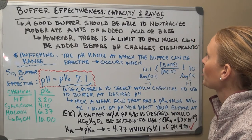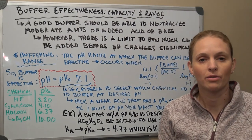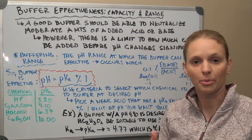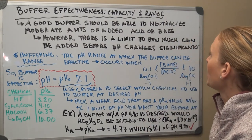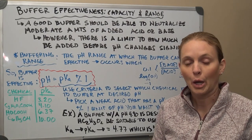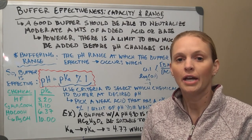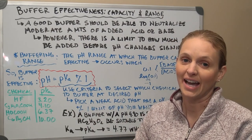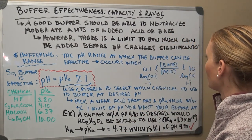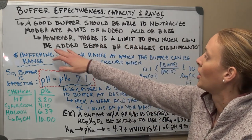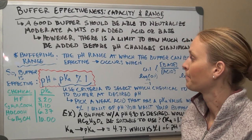Next we look at buffer capacity and range. A good buffer should neutralize moderate amounts of added acid or base so that pH changes very minimally. However, there is a specific limit: if there's only a certain amount of acid and base species present, you can only add so much before those components are consumed and the buffer fails.